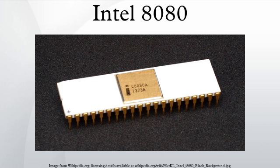The internal 7-bit push-down call stack of the 8008 was replaced by a dedicated 16-bit stack pointer register. The 8080's large 40-pin DIP packaging permitted it to provide a 16-bit address bus and an 8-bit data bus, allowing easy access to 64KB of memory.